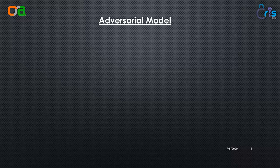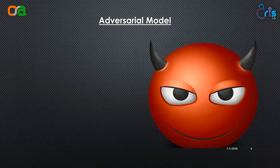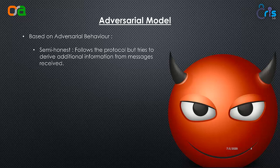Now we will come to the adversarial model. We divide the adversary based on behavior. The first type is semi-honest, where the adversary follows the protocol as mentioned but tries to derive additional information from the messages exchanged with other parties. So imagine if I was one of the adversaries — I would follow the protocol as mentioned, but I would sit with a pen and paper and try to derive additional information from the message exchanges.